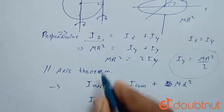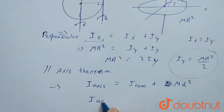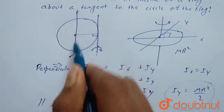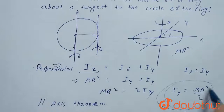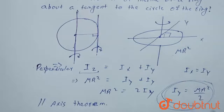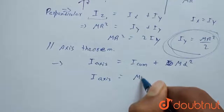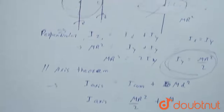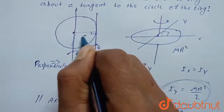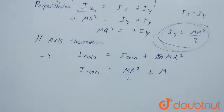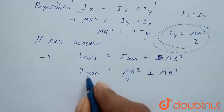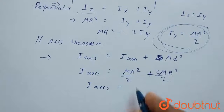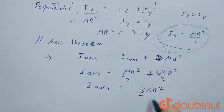I about this tangent axis equals I about the center of mass, which is MR²/2, plus MD². The distance between the tangent and the parallel diameter axis is equal to R, the radius of the circle. So MD² becomes MR². Therefore, I about the tangent axis equals MR²/2 + MR² = 3MR²/2.